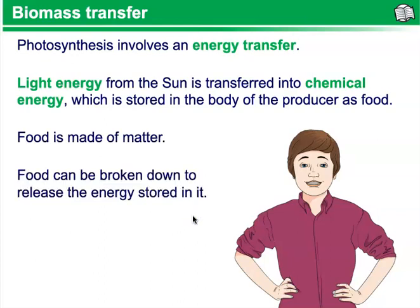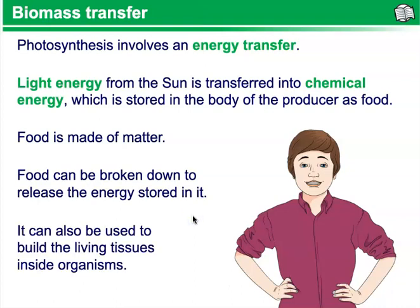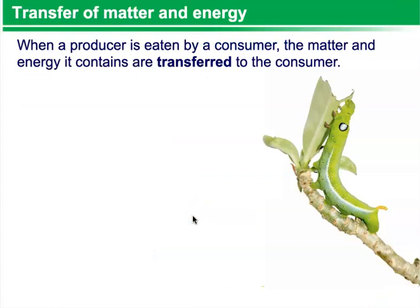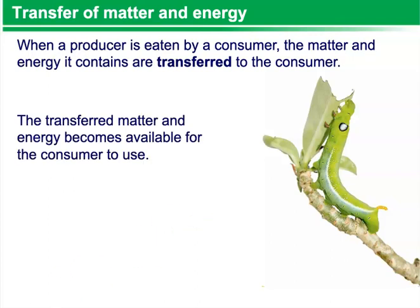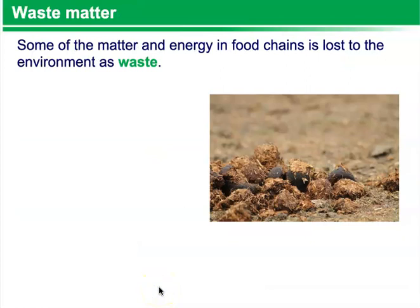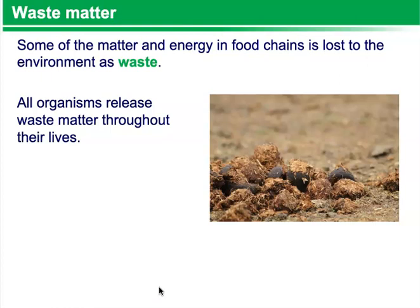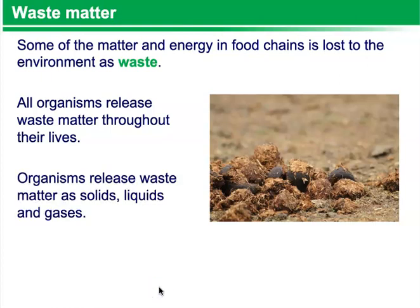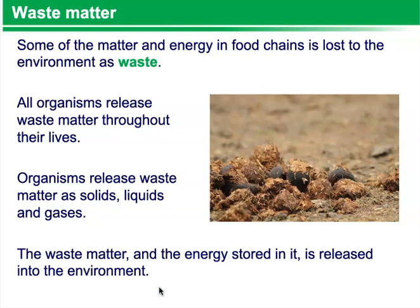Food is made up of matter. Food can be broken down to release the energy stored in it, and it can also be used to build the living tissues inside organisms. When a producer is eaten by a consumer, the matter and energy it contains are transferred to the consumer. The transferred matter and energy becomes available for the consumer to use. Matter and energy is transferred again if that consumer is eaten by another consumer. Some of the matter and energy in food chains is lost to the environment as waste — organisms release waste matter as solids, liquids, and gases throughout their lives.